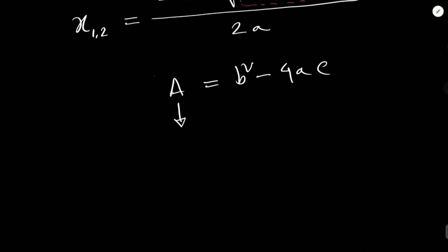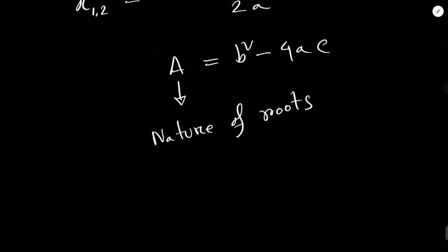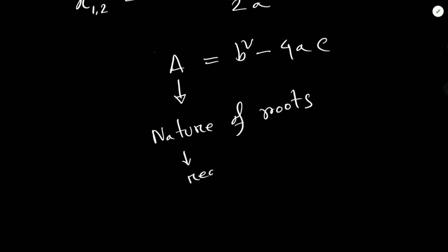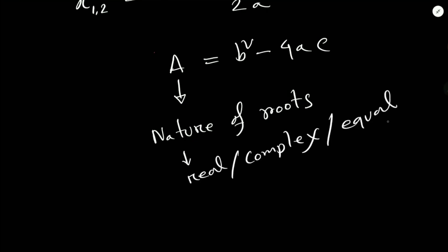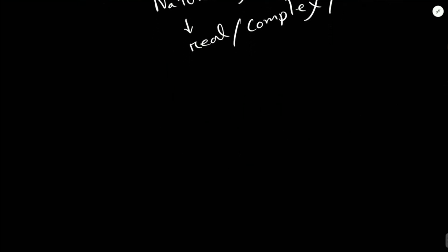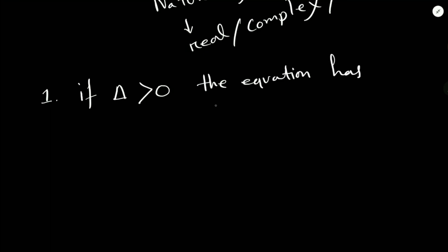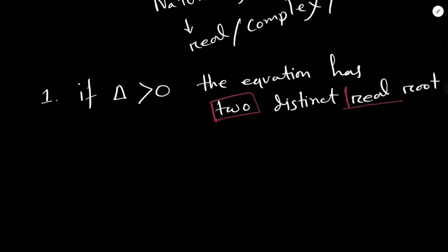This delta tells us the nature of the roots. By seeing the value of delta, we can understand whether the roots are real, complex, or equal. The first case: if Δ > 0, the equation has two distinct real roots. This means the roots are real numbers and distinct — that is, different from each other.